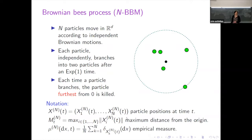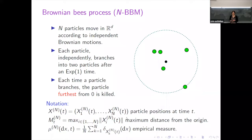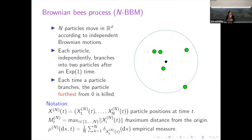We call it the Brownian Bees process, but you could also see it as an example of an N-particle branching Brownian motion, or NBBM. The particle system consists of N particles that move around in R^d for any positive integer d. They move according to independent Brownian motions, and each particle carries a clock with an independent exponentially distributed time with mean one. When the clock rings, the particle branches into two particles. But whenever a particle branches, the particle furthest from the origin in terms of Euclidean distance is killed, so there are always exactly N particles in the system at all times.